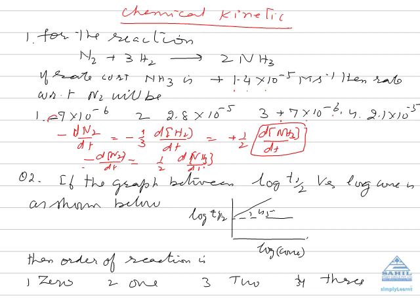Keep in mind that minus is not to be written before the theoretical value — it represents only a symbol because rate is final minus initial, and final can never be more than initial, so we put a minus sign so that the rate comes out to be positive.